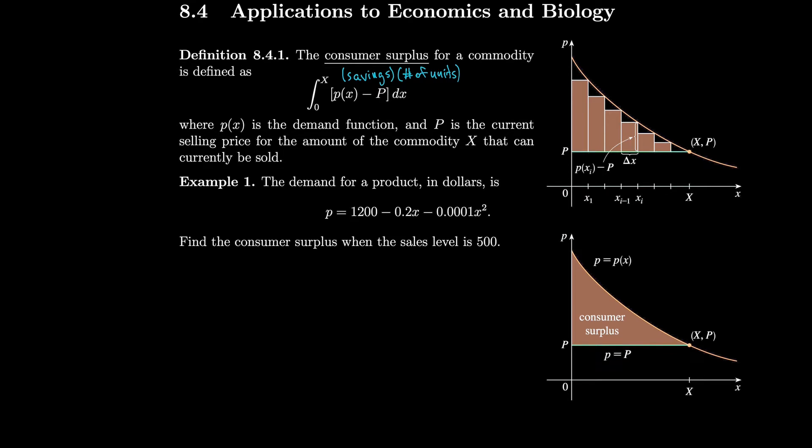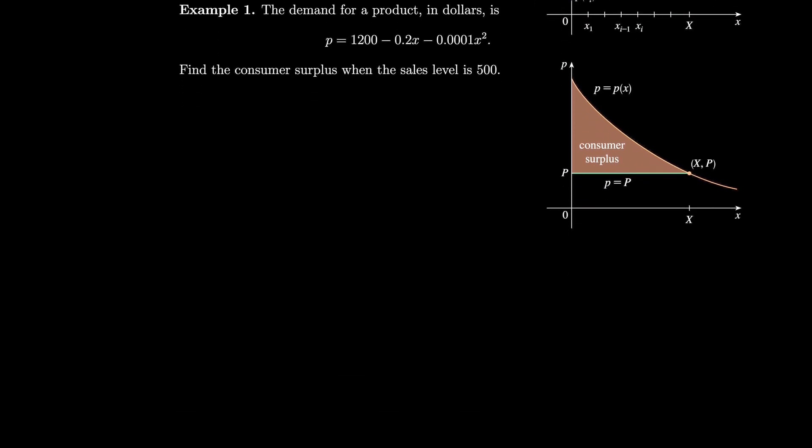Let's do an example. The demand for a product in dollars is p equals 1200 minus 0.2x minus 0.0001x squared. Find the consumer surplus when the sales level is 500.